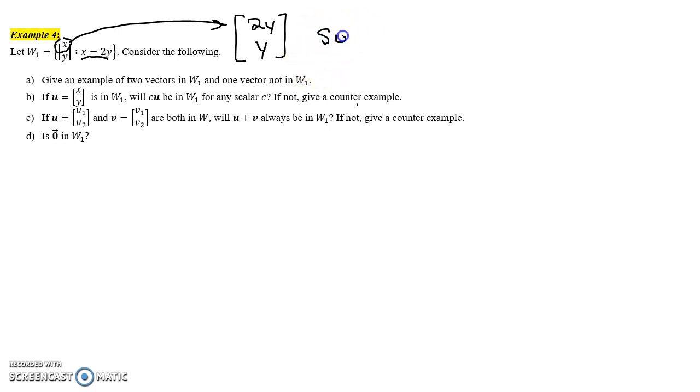This is a subset of the vectors in R², which have this form [x, y], where the first component is just any number, and the second component is just any number. But W₁ narrows it down specifically to the ones where the first component is 2 times the second component.